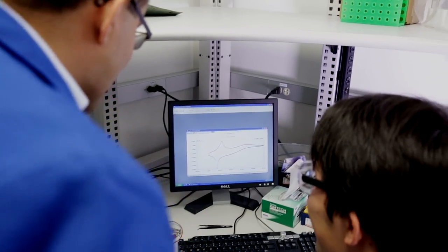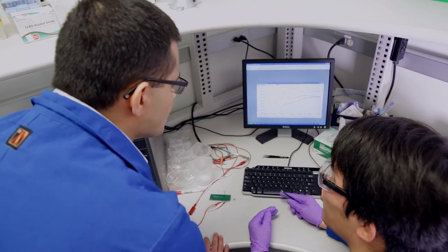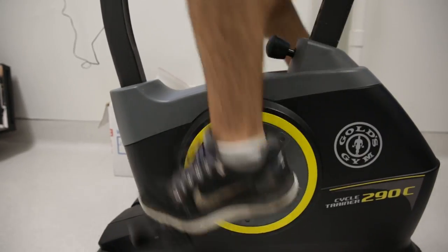Sweat provides us with a wealth of information about our body condition. It consists of a wide spectrum of different chemicals. But how do we get information that is accurate, useful about the body and health and mental conditions by analyzing sweat?